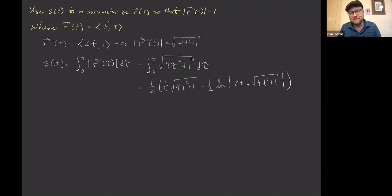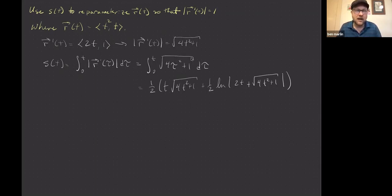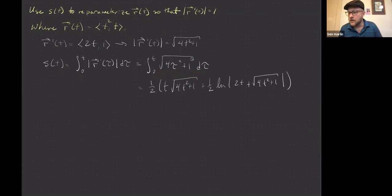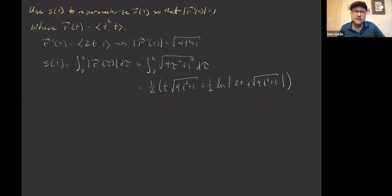If you're like me, you don't know what that integral is. Go check out Symbolab — it's a website — or Mathway, or Wolfram Alpha. There are multiple options to do integrals like this. I turned it over and let it do the integration for me. It gave me this s(t): one-half times t times √(4t² + 1) plus one-half times the natural log of the absolute value of (2t + ...).